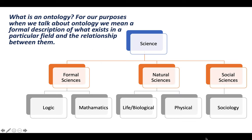So what is an ontology? For our purposes, when we talk about ontologies, we're talking about a formal description of what exists in a particular field and the relationships between those things. In this diagram, we're looking at the field of science, which can be broken down into three sections: formal sciences, natural sciences, and social sciences. Each one of these can be broken down further — for example, logic and mathematics for formal sciences; life and biological sciences or physical sciences for natural sciences; and sociology for social sciences. There may even be relationships between these categories.